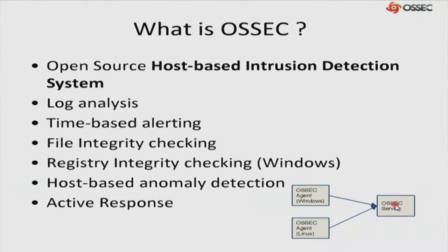OSSEC works as follows: there is an OSSEC server, which can be a single server or multiple servers — usually it will be a single high-configuration server capable of doing a lot of computation with high network bandwidth. This server is connected with all the other systems in the network. On each system we will have an OSSEC agent. Depending on the type of system — Windows, Linux, or iOS, and even firewalls — there are separate agents for each. These agents collect the logs from the host and send them to the OSSEC server for processing.